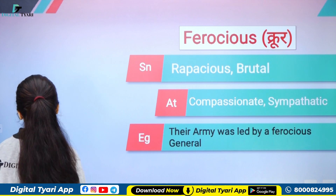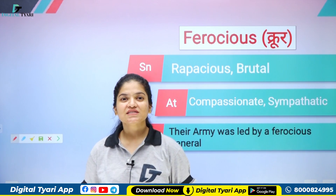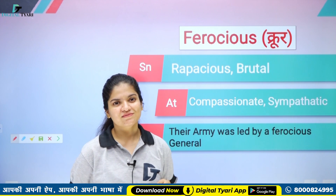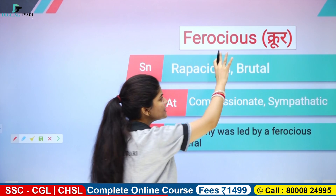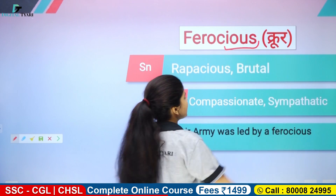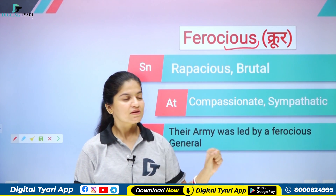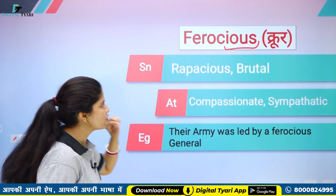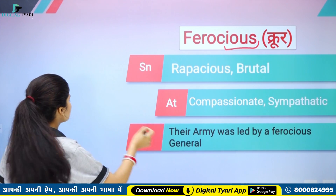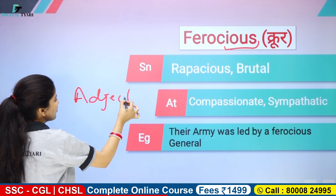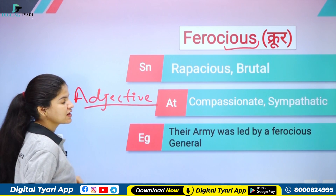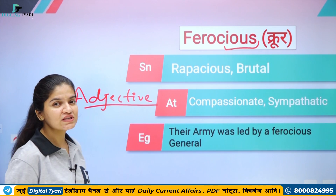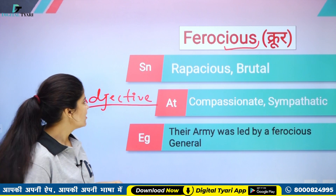Next word dekhte hain — FEROCIOUS. Ferocious ka matlab hona — jis person mein agar is person ka bol raha hai hum ki ye ferocious hai, toh yani is person ke andar bilkul bhi daya nahi hai. Toh ferocious — ye word kya hai? Kisi cheez ki quality bata raha hai — kroor hona, jismein bilkul bhi daya nahi hoti, us person ko hum bolte hain ferocious. Ferocious ek adjective hai. Iska jo humara noun hai woh kaise banega — ferocity.